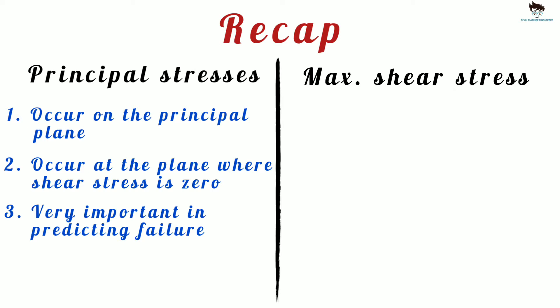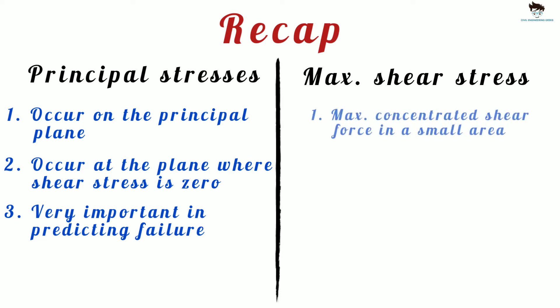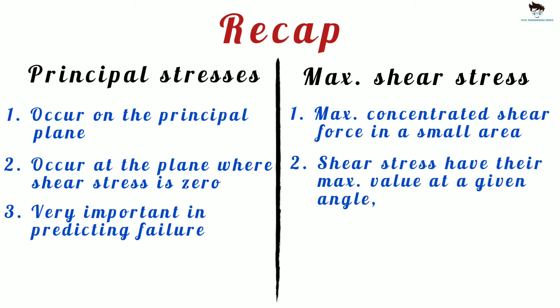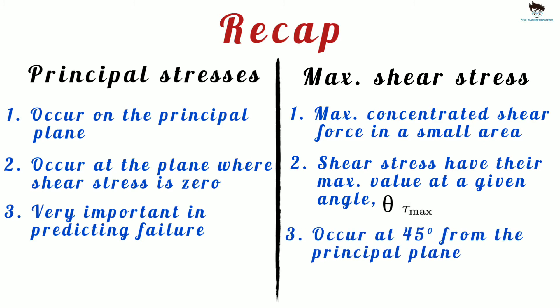Maximum shear stress is the maximum concentrated shear force in a small area. Like the normal stresses, the shear stress will also have a maximum value at a given angle theta tau max. Maximum shear stress occurs at the plane which is 45 degrees from the principal plane.